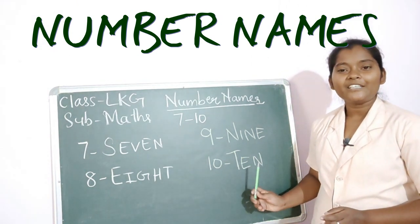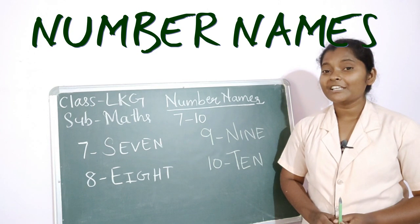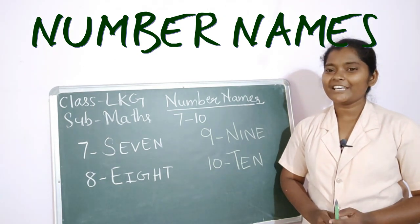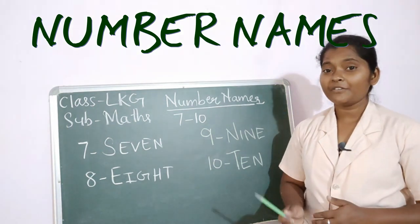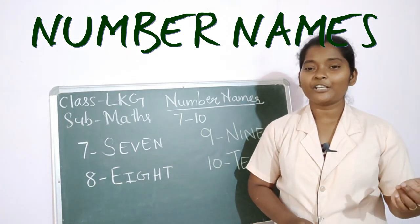T E N — ten. Say students: T E N — ten. Yes! Now let's repeat all number names from one to ten once again: O N E — 1, T W O — 2, T H R E E — 3, F O U R — 4, F I V E — 5, S I X — 6, S E V E N — 7.